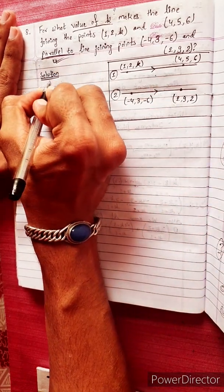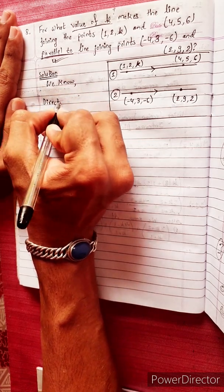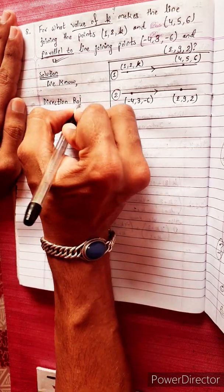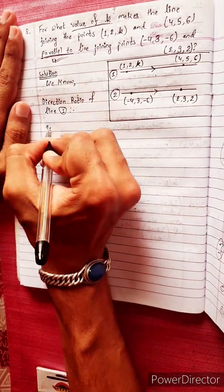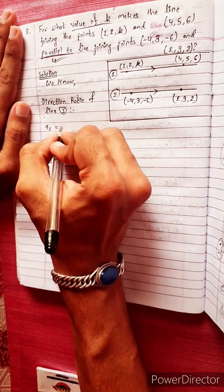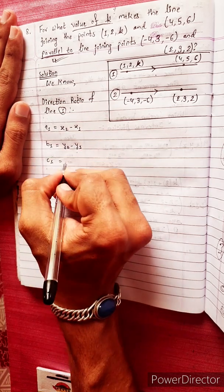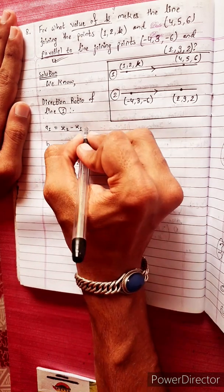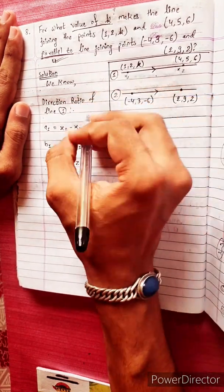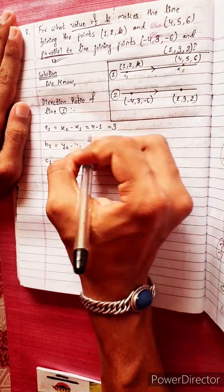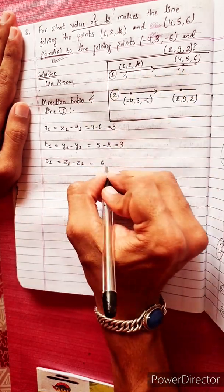We know the direction ratio of line one is a1, b1, c1. a1 = x2 minus x1 = 3 minus (-1) = 4. b1 = y2 minus y1 = 5 minus 2 = 3. c1 = z2 minus z1 = 6 minus k.